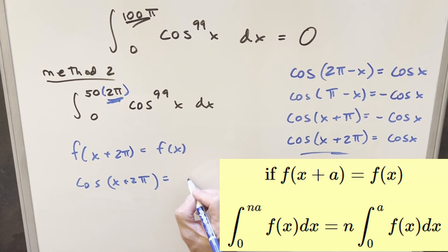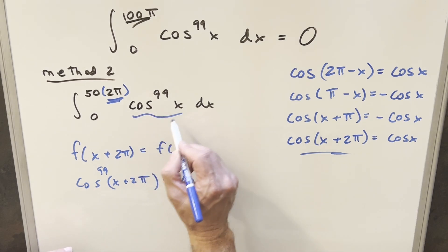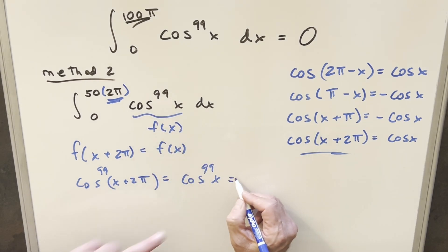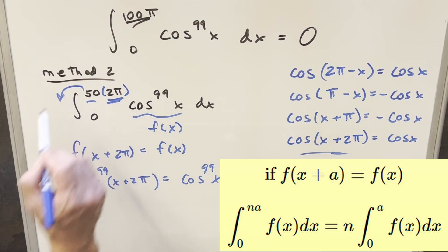When we go to our formula, this thing here is the same thing as cosine x. In our problem, the whole thing is raised to the 99th power, just raise it to the 99th power on both sides. But what you notice, if this is f of x, then this right here is the same thing. This is our f of x.